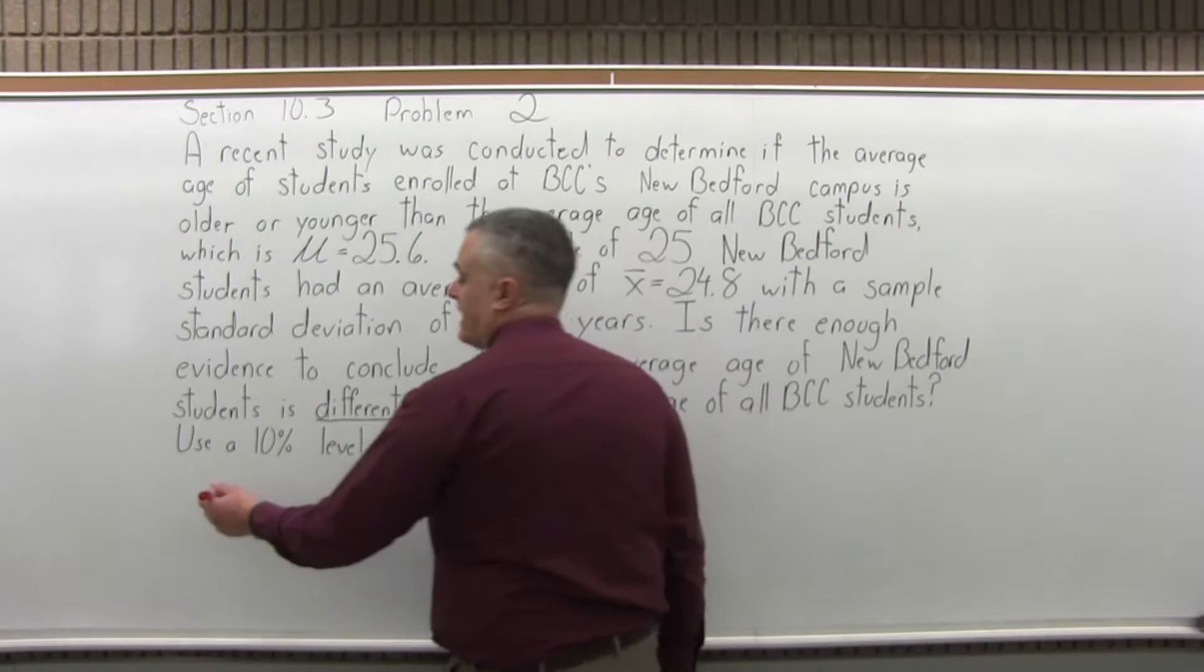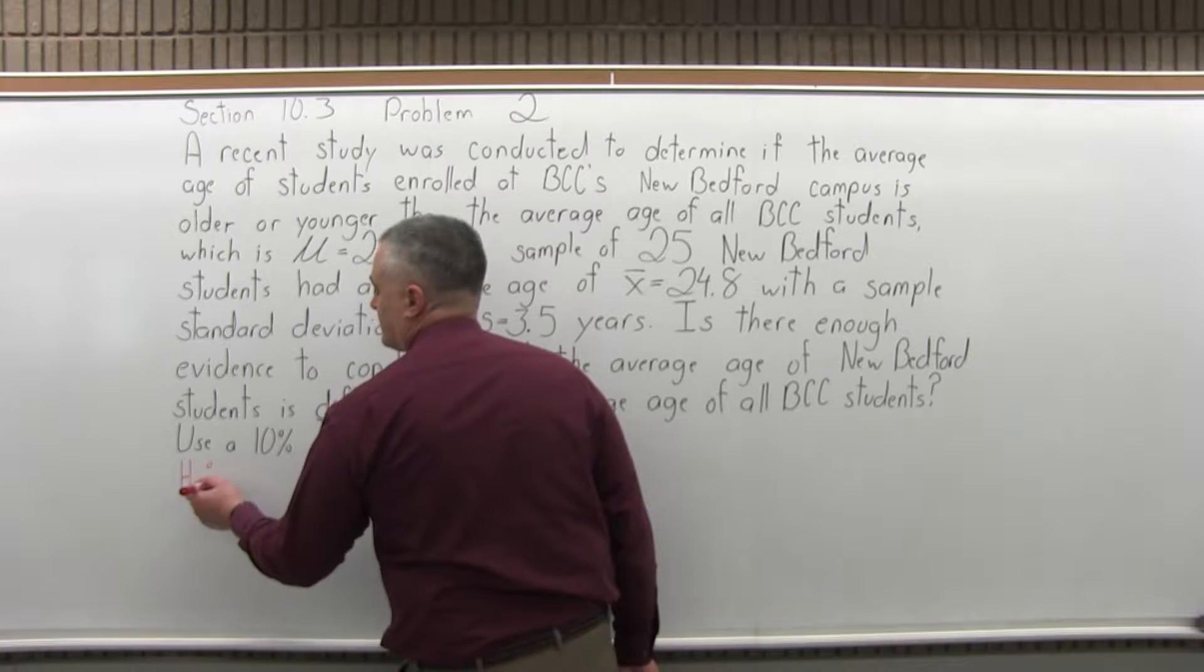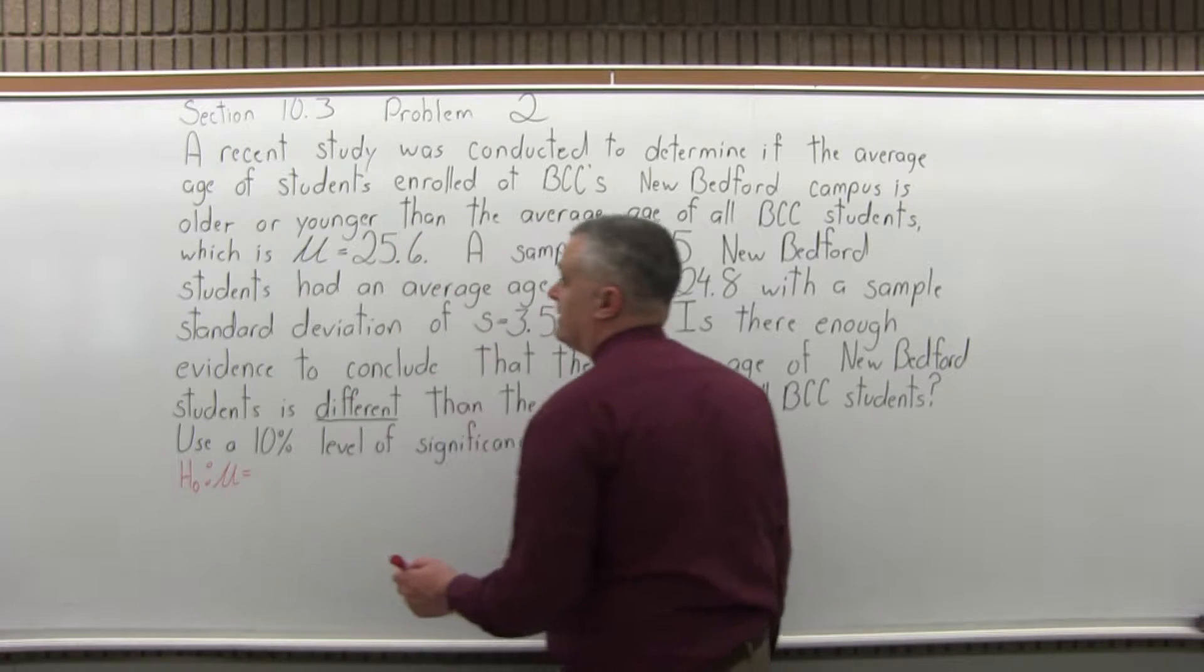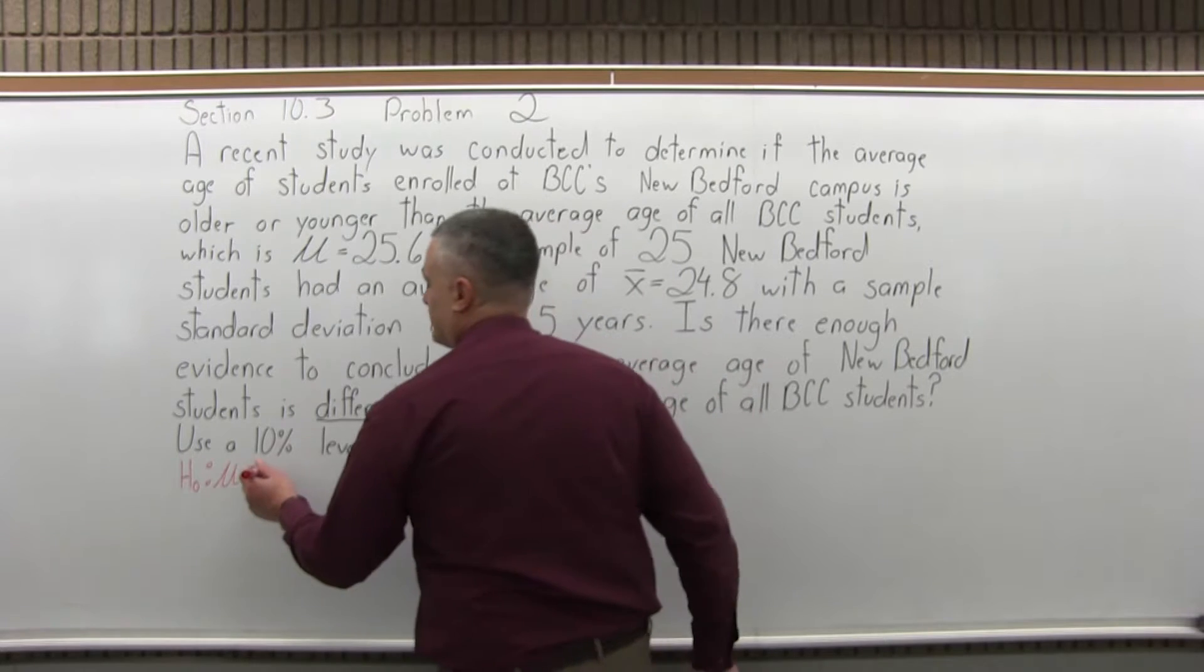The first step, step one, is state the null hypothesis. So the symbol is H with a subscript of zero, μ the population mean is, in this case, equal to 25.6.